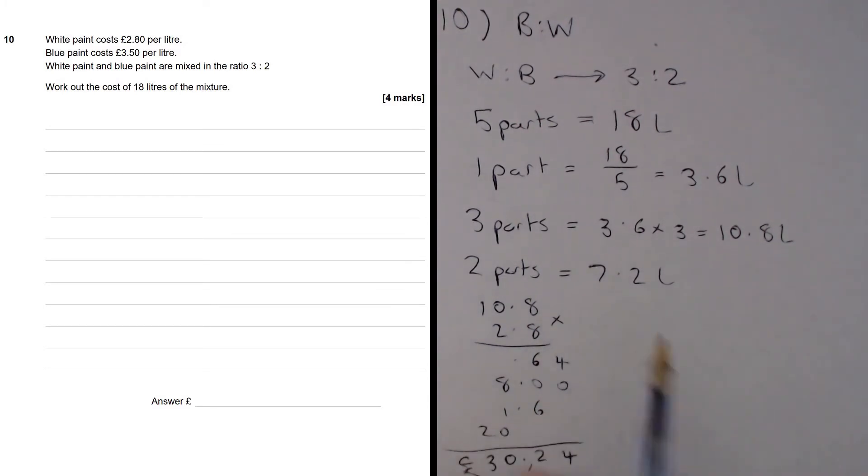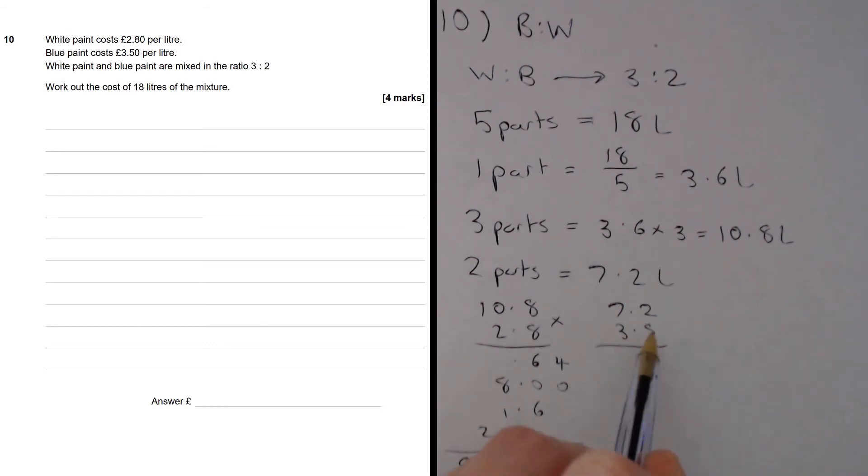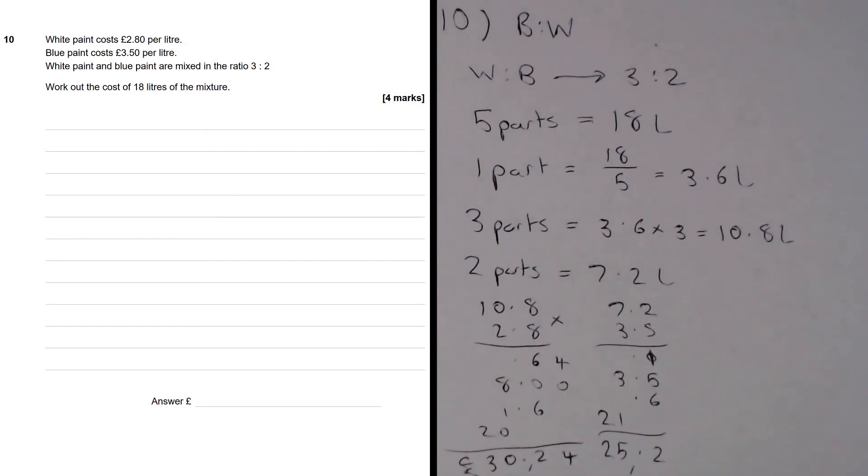We need to do the same for the blue. So we are told that blue paint costs £3.50 per litre and we need 7.2 litres. So we are going to do 7.2 multiplied by 3.5. 0.2 times 0.5 is 0.1, 0.5 times 7 is 3.5, 3 times 0.2 is 0.6 and then 7 times 3 is 21. We can add all of those up and we are going to get £25.20. So the cost of the white paint is £30.24 and the cost of the blue paint is £25.20.